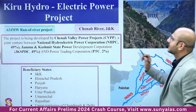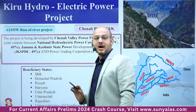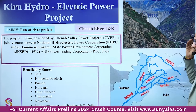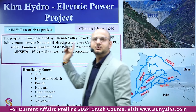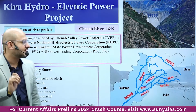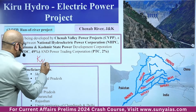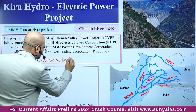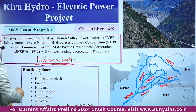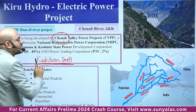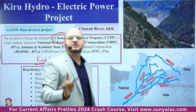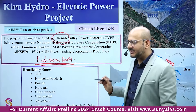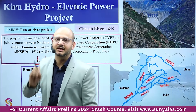The first topic is the Kiru Hydroelectric Power Project. Where is it located? It is located near Kishtwar district. Remember — it is on the river Chenab. At least remember this, not on the Jhelum. It is in the news because recently the project was allocated civil projects.